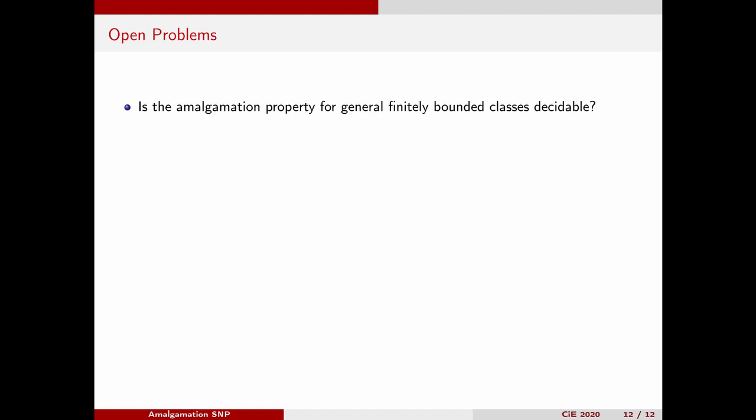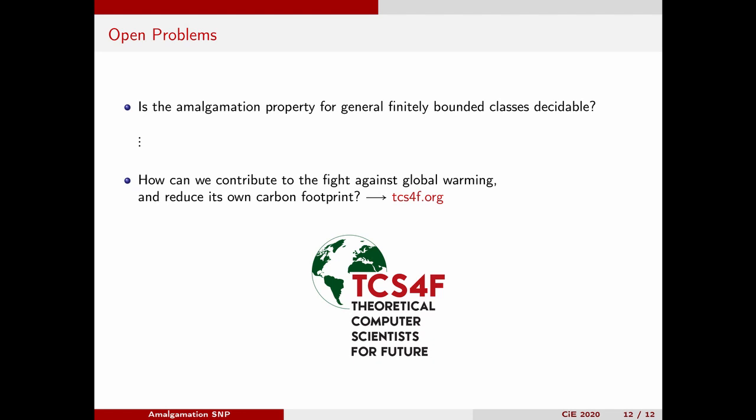An obvious open question is: can we drop the assumption that in amalgamation SNP the existentially quantified predicates are binary? This is related to the open question of whether we can effectively decide the amalgamation property for a given finitely bounded class. Finally, there is a challenge for our community of a completely different type. By now, we all know about the traumatic consequences of human-caused global warming that we will be suffering from in the future. Our community contributes to this mainly through our particular conference publication system, which involves a considerable and ever-increasing amount of air traffic. We believe that our community needs to make an effort to reduce its carbon footprint. To join forces, there is the platform TCS for Future, which we invite you to visit.